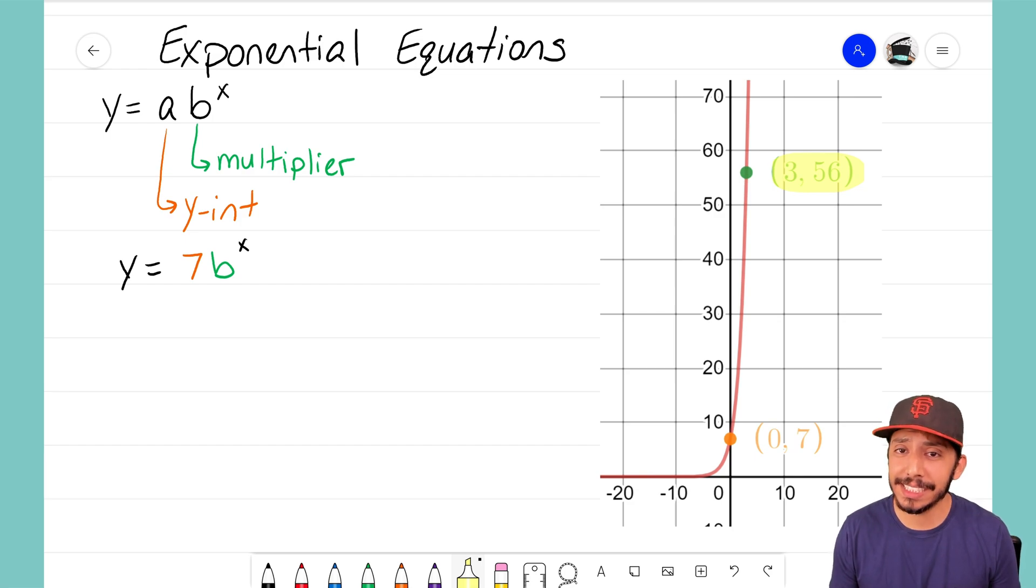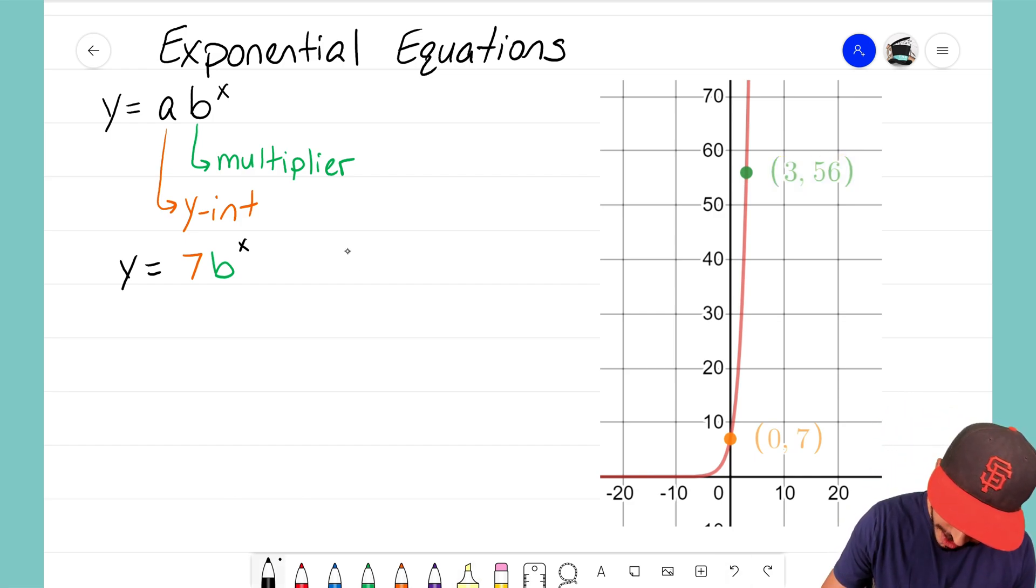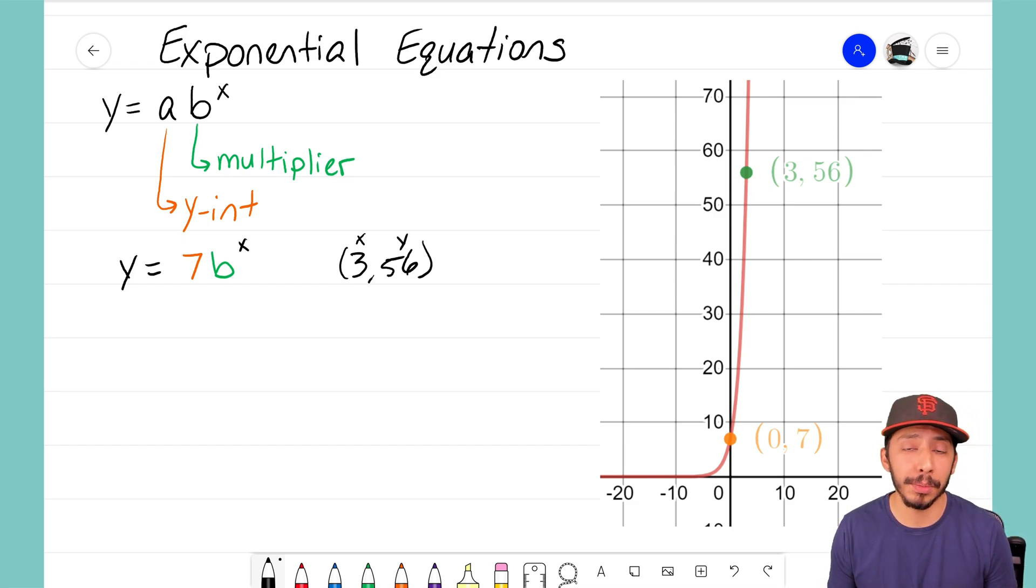We're given that point of (3, 56). Well 3 here represents an x term, 56 represents a y term. So why don't I just take those two numbers, put them into my equation, and then we'll just have B as the only variable left.